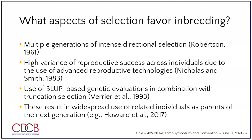We have high variance of reproductive success — a fancy way of saying some animals have more offspring than others. In the dairy case, bulls can make hundreds or thousands of offspring. Elevation had over a million daughters. When I worked for Peak Genetics, Zazzle the bull — we made hundreds of Zazzle signs trying to get him used everywhere. That really ramps up the inbreeding problem.